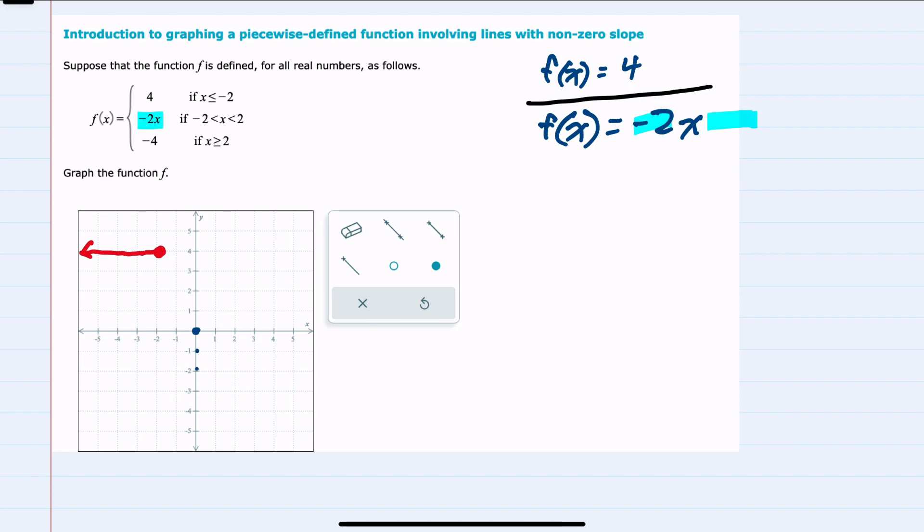So down 2 over 1. We can connect these points. This is our second line. But again, looking at the piecewise portion, this is only for the x values between negative 2 and positive 2.